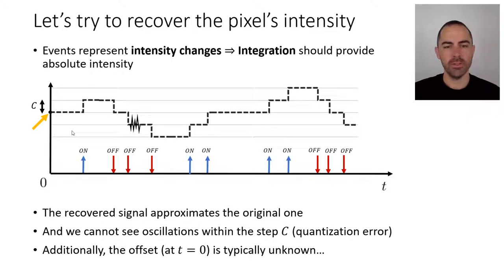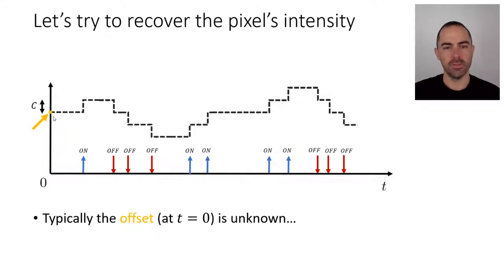Well additionally we see that not only is that we cannot see the oscillation that happens within the quantization interval and that the recovered signal is an approximation, is that the offset which is when we, this height here where we started, is typically unknown.